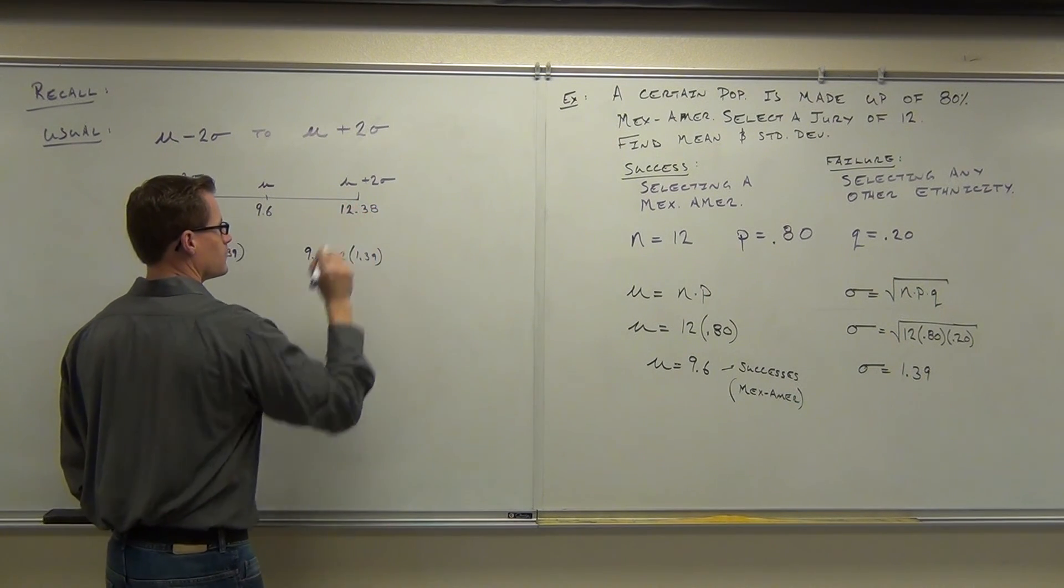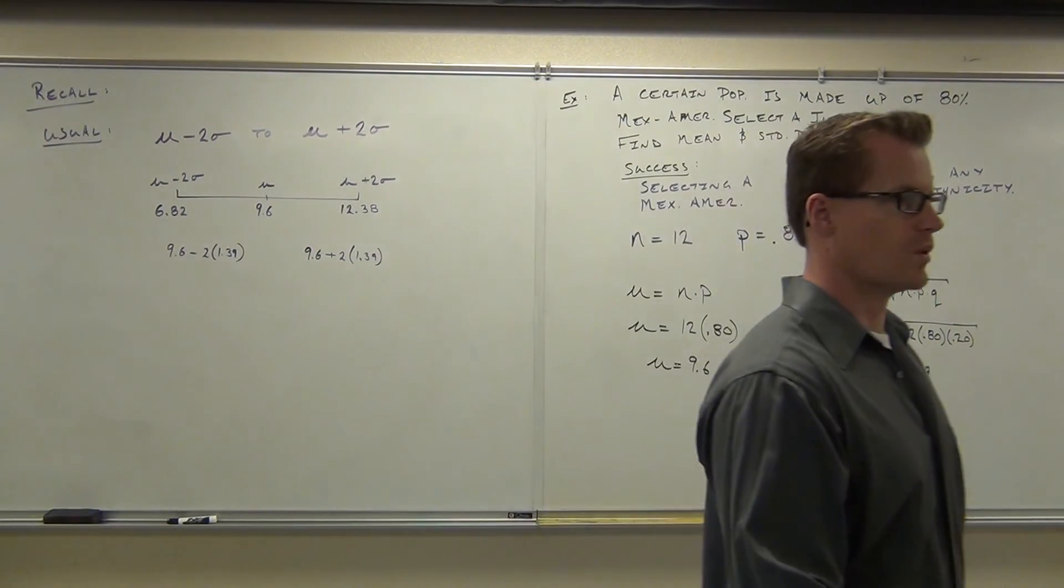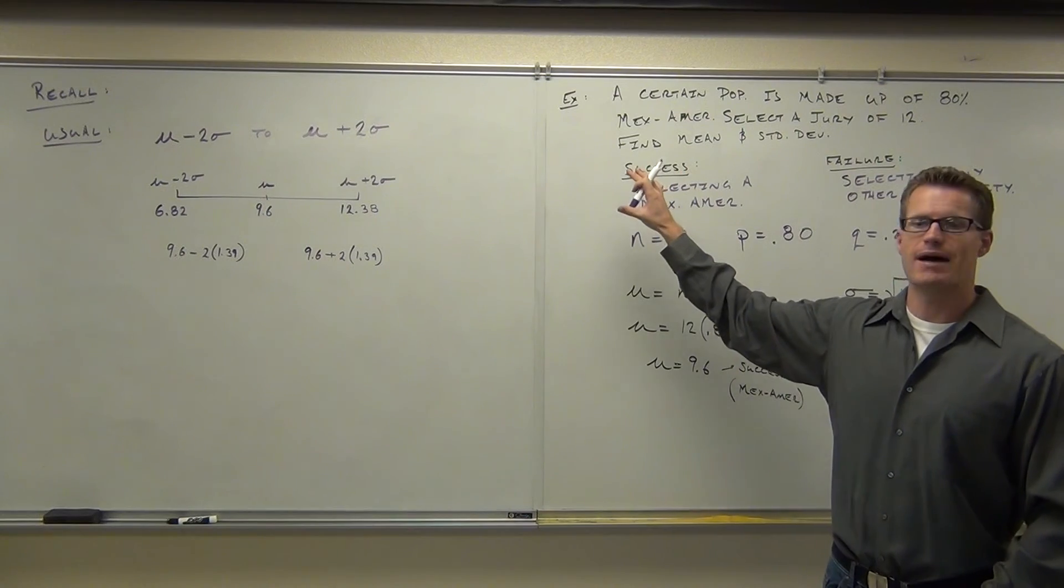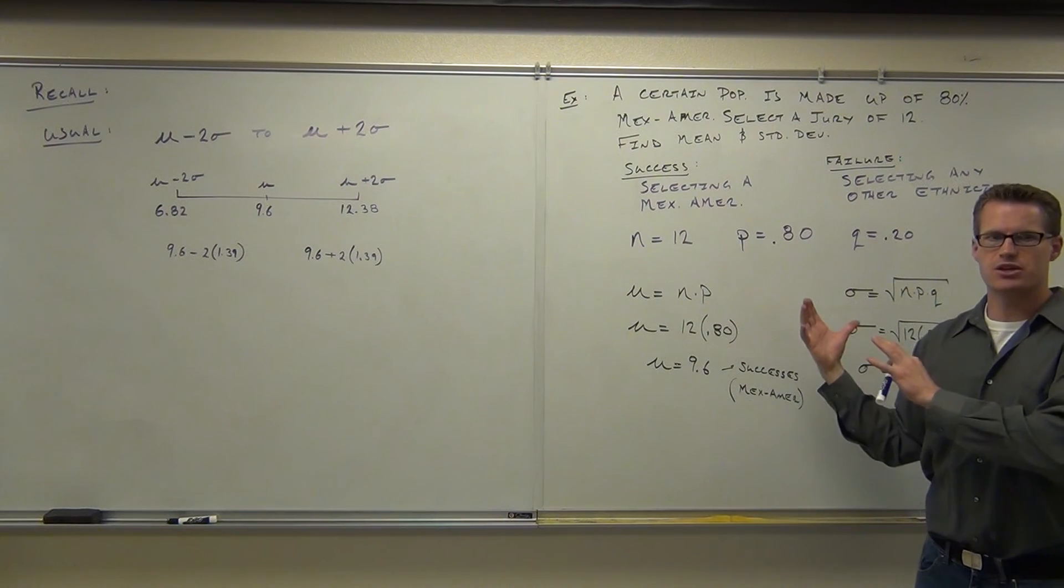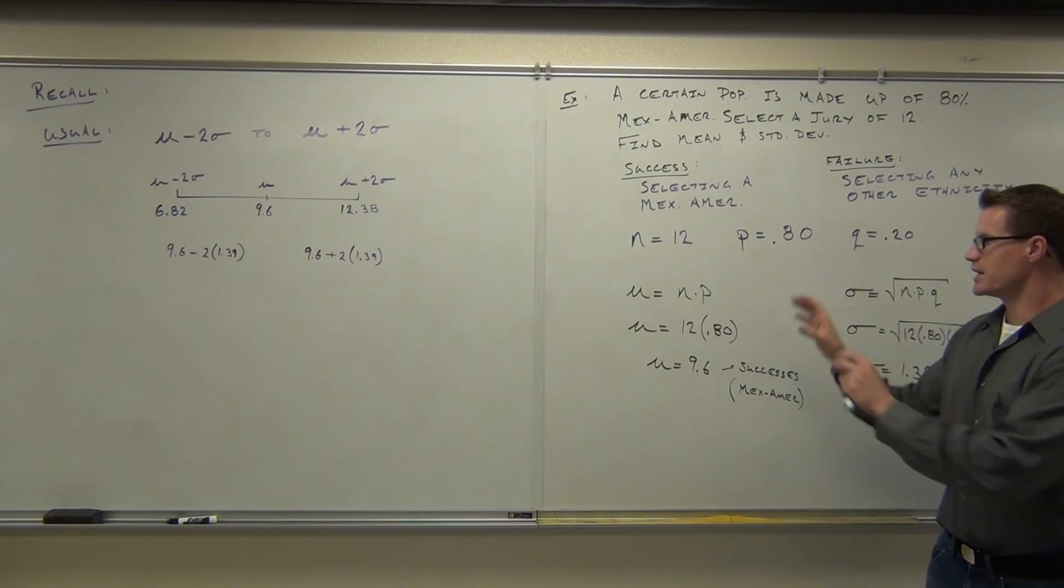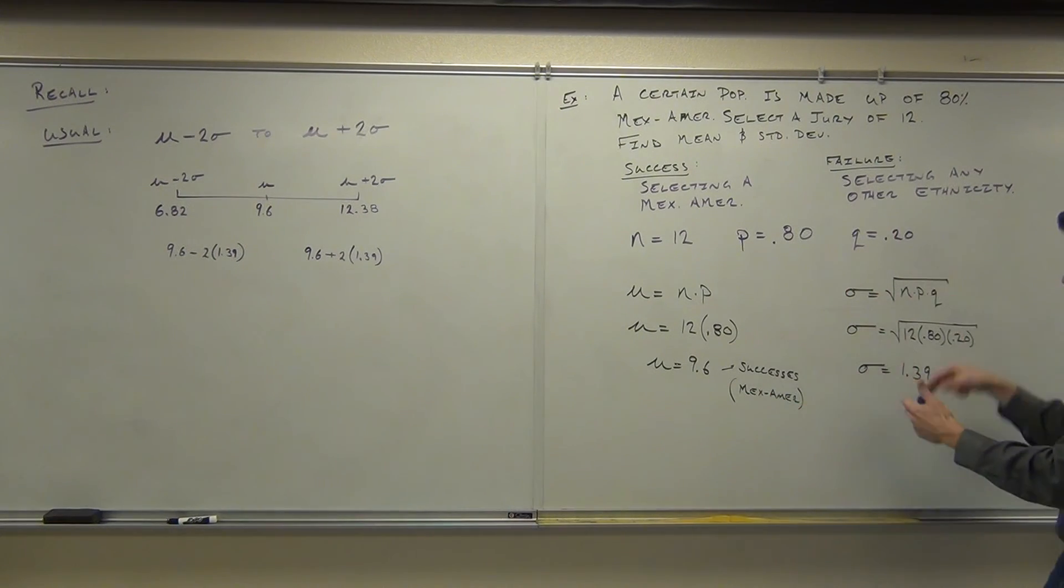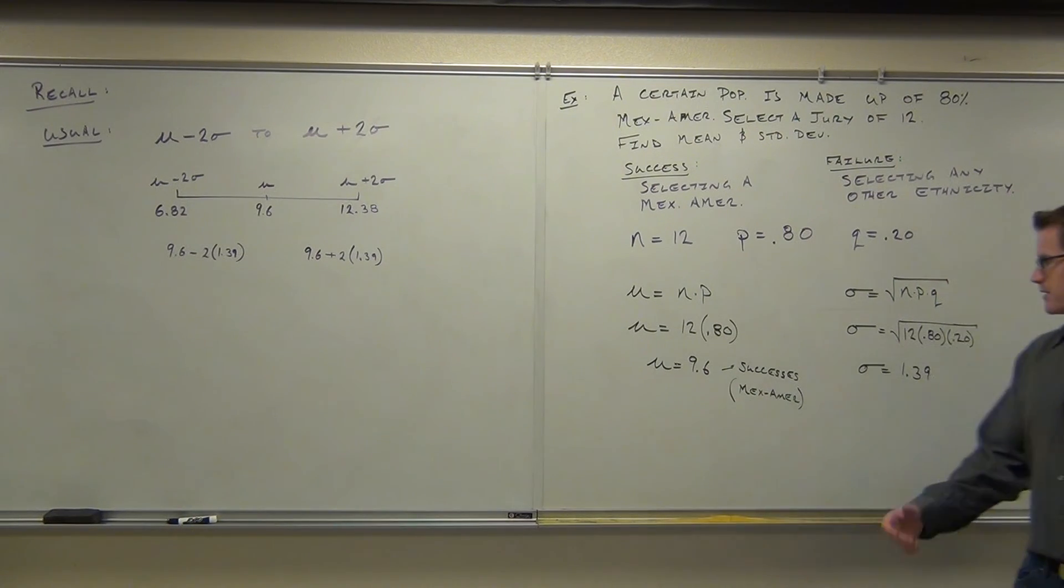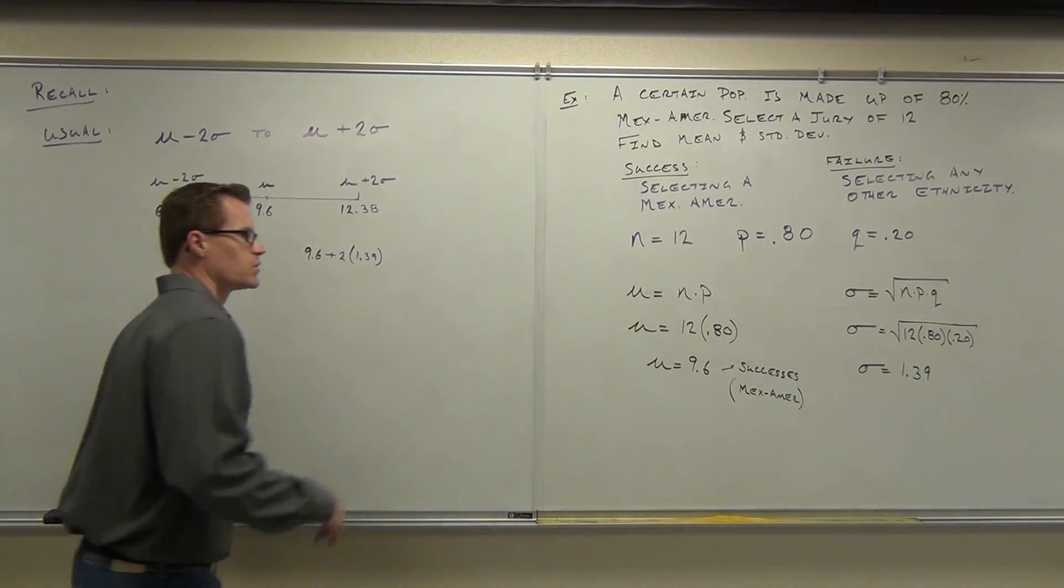I'm going to stop right there and kind of recap what we've done so far. First thing we did is identify success. You have to be able to do that. What is a success? What's a failure? You have to do that because in order to get your mean and your standard deviation, you've got to be able to identify your p and your q, and your n. You can't do that unless you've identified your success. We identify those three numbers. That's all you need for your mean and standard deviation. Mean's pretty easy. Standard deviation, square root, but still pretty easy. This gives you the average number of successes you should have every time you do your procedure. This gives you your average distance from the mean.